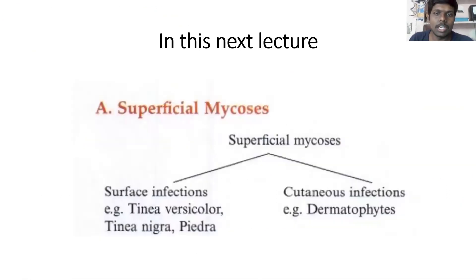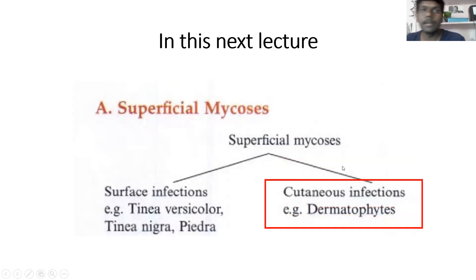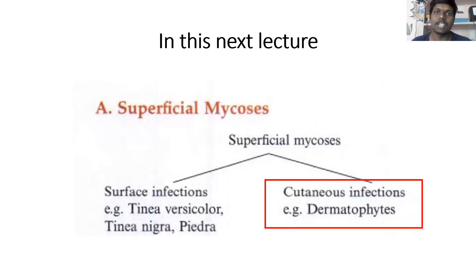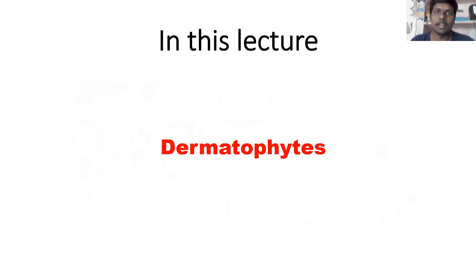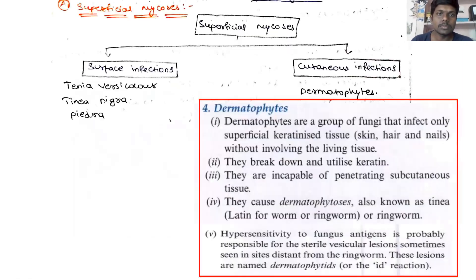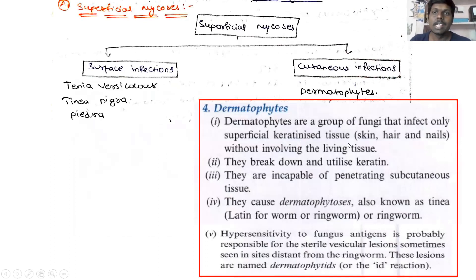Coming to the second type of infection under superficial mycosis, which is cutaneous infections — these include dermatophytes. So these are the fungal infections that will occur to the dermis layer of the skin. Dermatophytes are a group of fungi that infect only superficial keratinized tissues such as skin, hair, and nails without involving the living tissues.